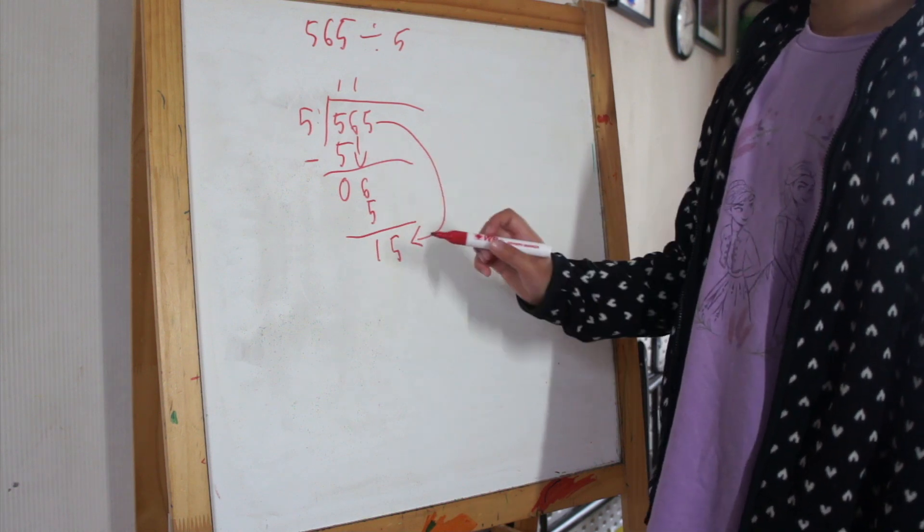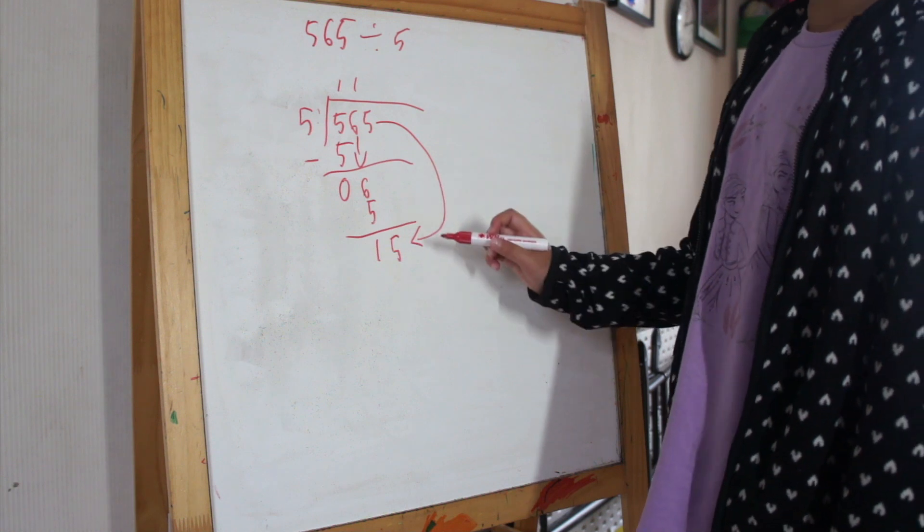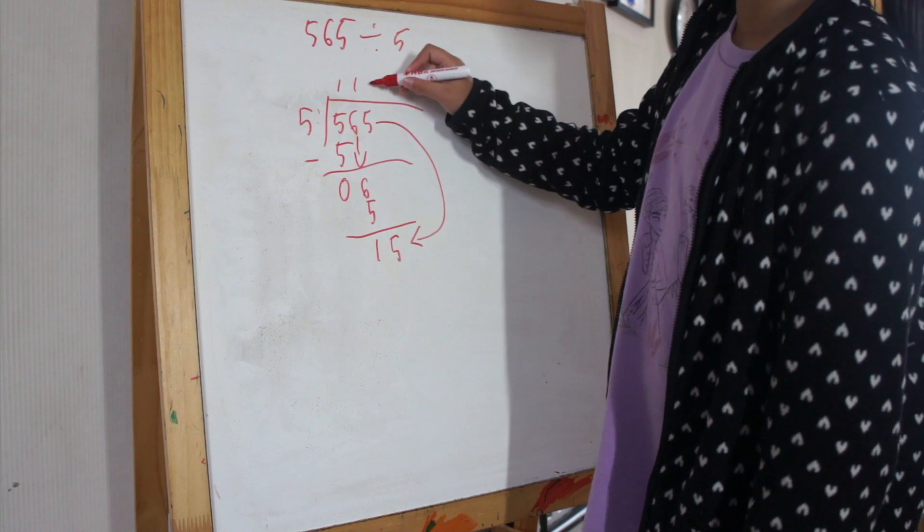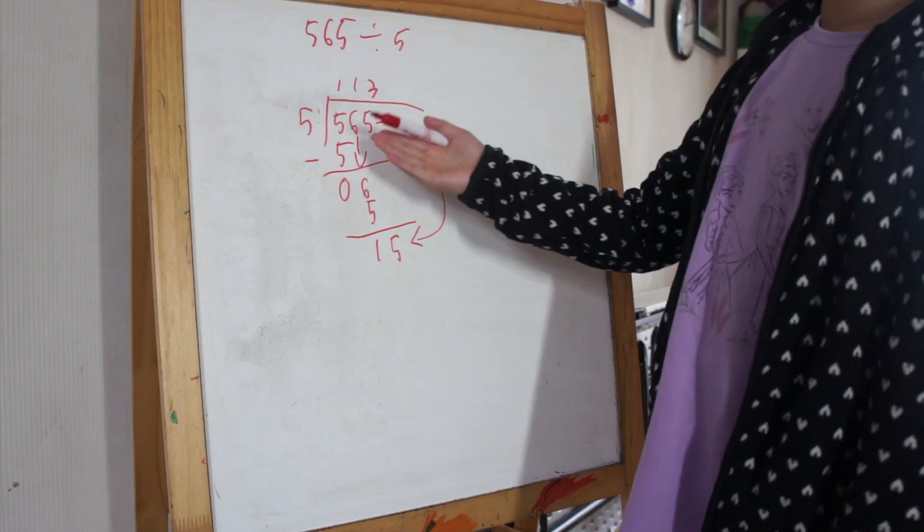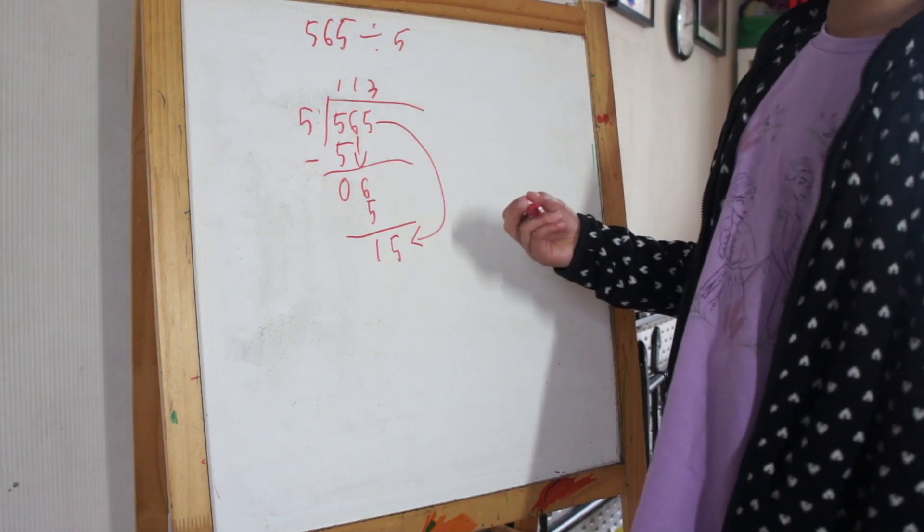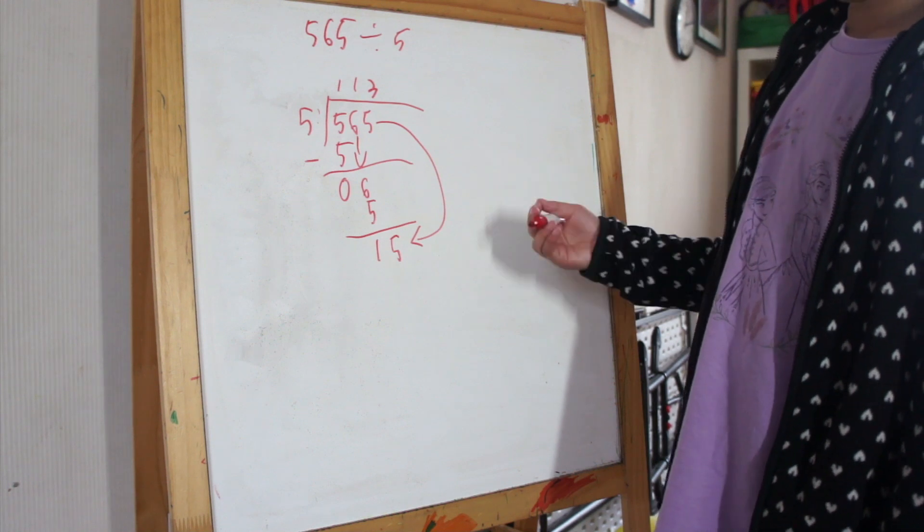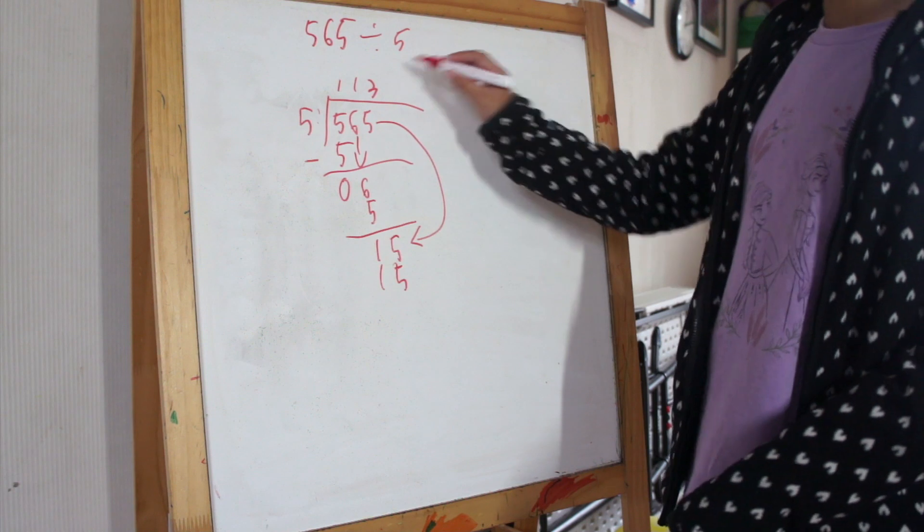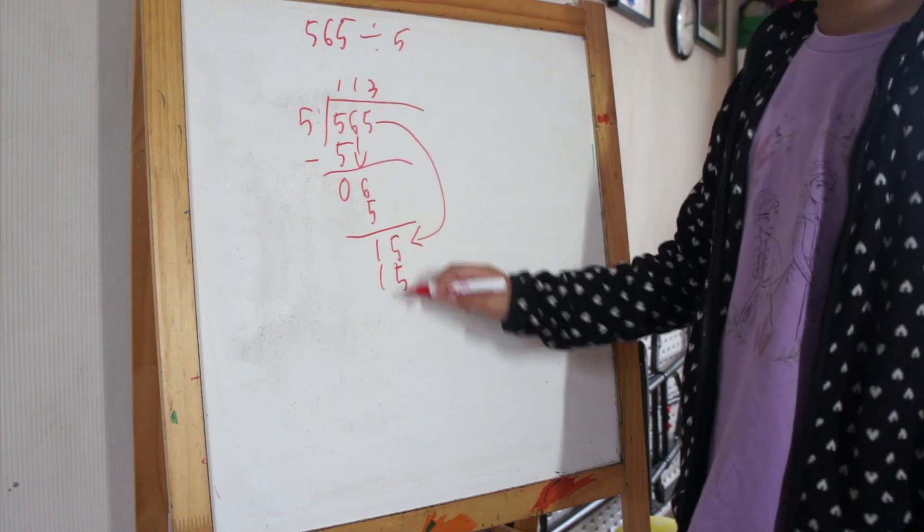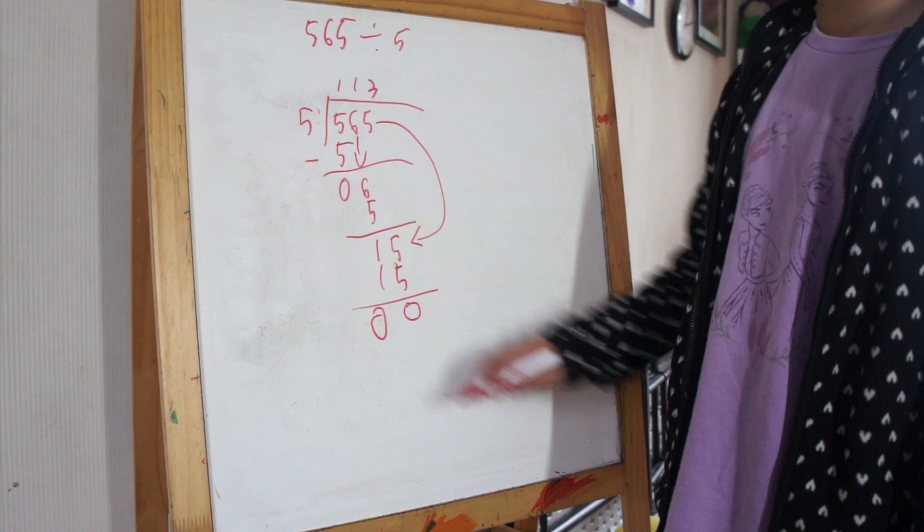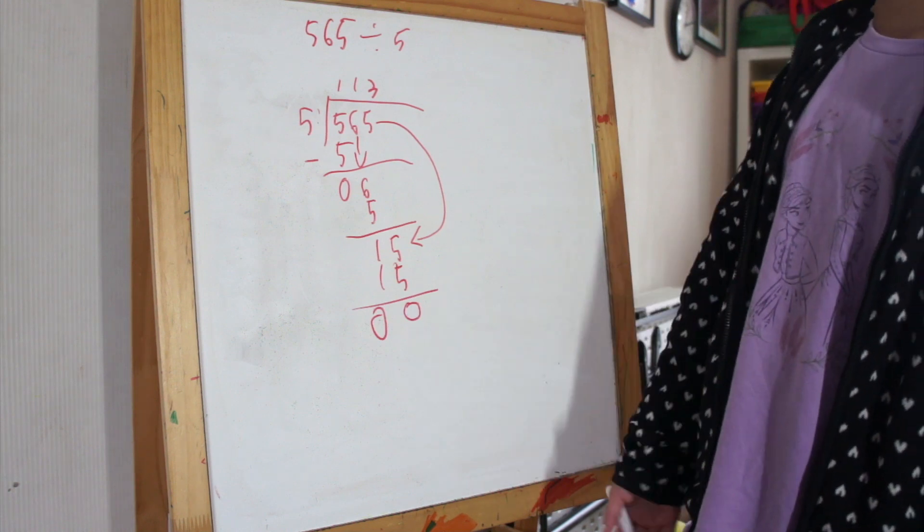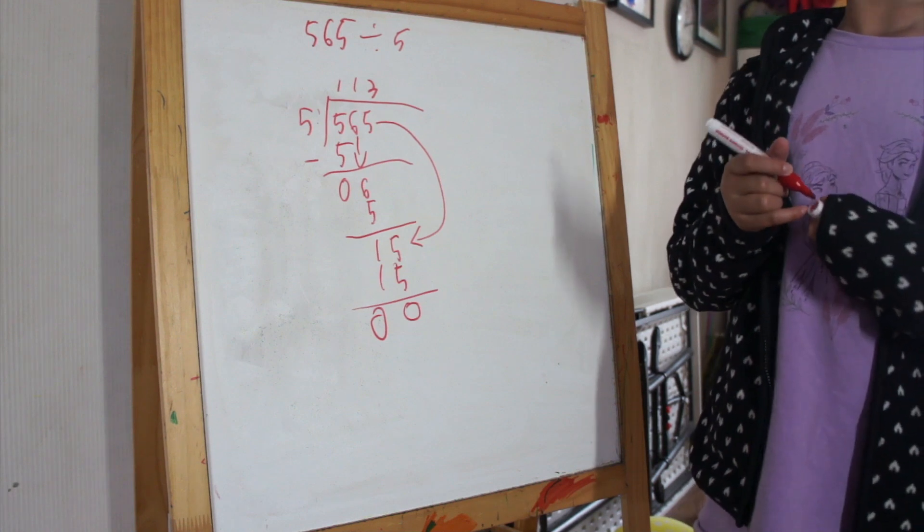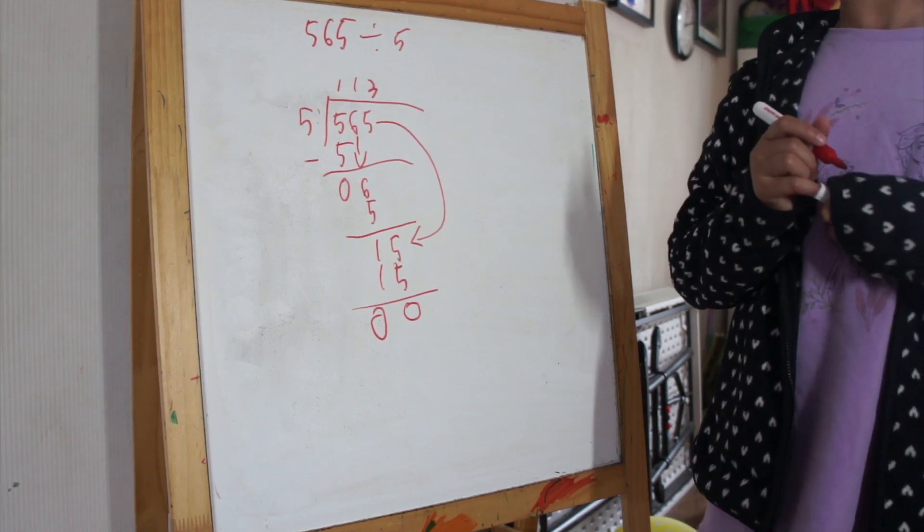Then, 5 times what equals 15? 5 times 3 equals 15. So you write 3 on top. Then you get 15 down here because 3 times 5 equals 15. You subtract it and it becomes 0, so there's no remainder. The answer is 113. Don't forget to like and subscribe. Thank you.